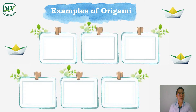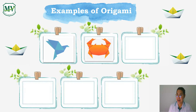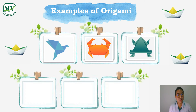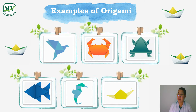Teacher Pia has prepared examples of origami for you. The first example is a bird — an origami bird. Next, a crab. Then a frog. We also have a fish. Next is a seahorse, and the last one is a snail.